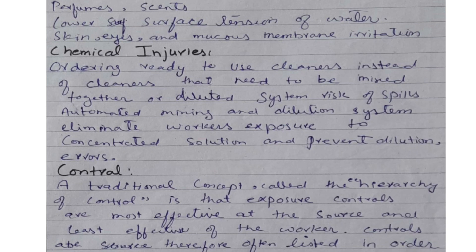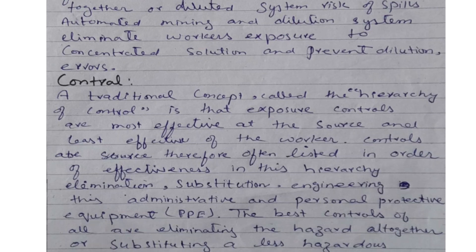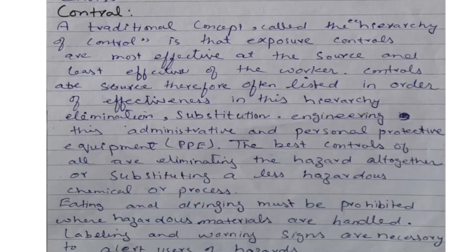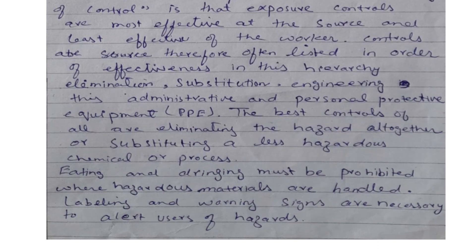A traditional concept called the hierarchy of control states that exposure controls are most effective at the source and least effective at the worker level. Controls are therefore often listed in order of effectiveness: elimination, substitution, engineering controls, administrative controls, and personal protective equipment. The best controls of all are eliminating the hazard altogether or substituting a less hazardous chemical or process.